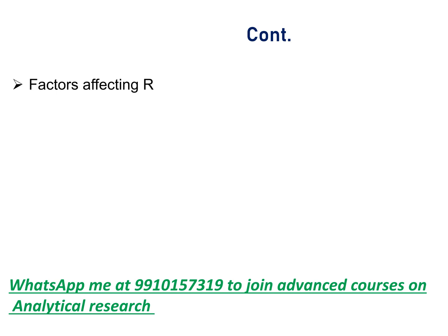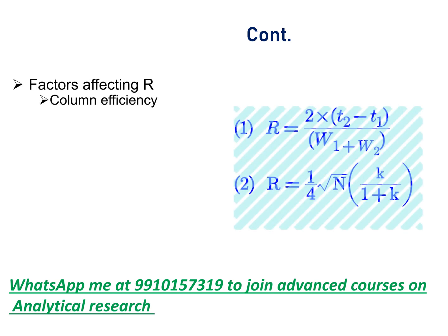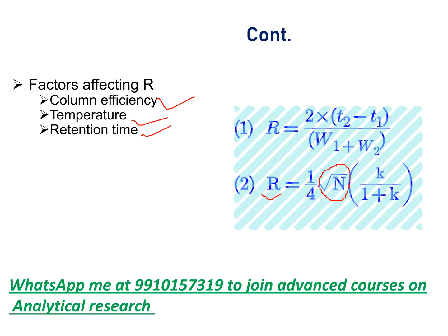Factors affecting resolution: Column efficiency — resolution is increased by increasing column efficiency because resolution is directly proportional to the square root of column efficiency or theoretical plates. Temperature — on increasing temperature, column efficiency is increased because peak sharpness is increased. Retention time — on increasing retention time, resolution is increased because resolution is directly proportional to retention time.